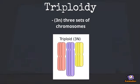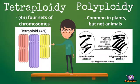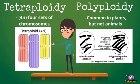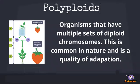Triploidy mutations contain three sets of chromosomes. Tetraploidy mutations result in four sets of chromosomes, while polyploidy mutations are common in plants but not in animals. Polyploids are organisms that have multiple sets of diploid chromosomes.